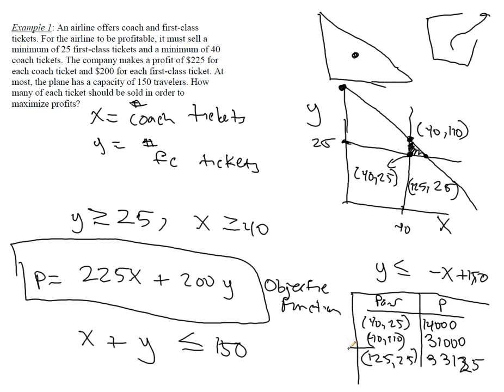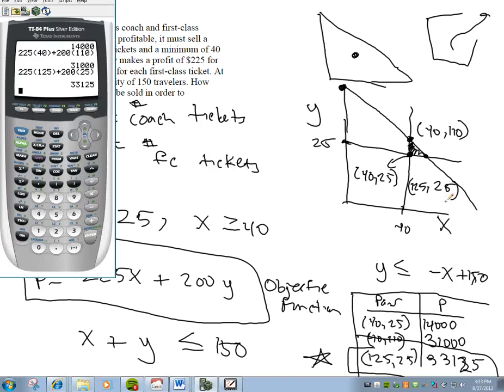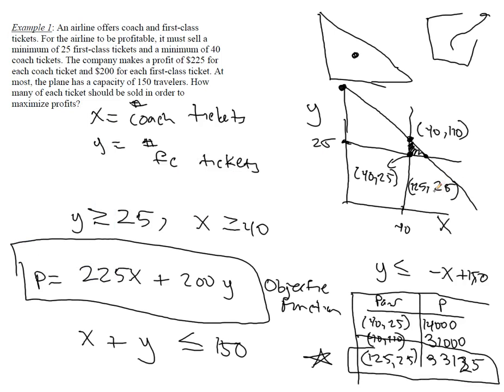So this means that my magic numbers are here. I should sell 125 coach tickets, 25 first class tickets in order to maximize the profit for this airline. So notice that in this case, we are actually dealing with the minimum possible value of y. And that's probably because the ticket prices do not yield as big of a profit. So of course, minimize on these, maximize on selling these.